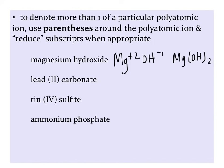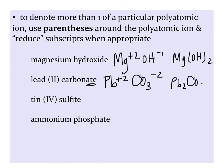In lead two carbonate, lead has a plus two charge, and carbonate with that -ate ending should clue you in to the fact that it's a polyatomic ion. CO3 with a minus two charge. Now when we crisscross our charges, we get Pb2(CO3)2. However, this is not the simplest ratio of ions in the compound. So we can take each of these subscripts and divide them by two, and we're left with just PbCO3. Here you do not need the parentheses around the polyatomic ion, because we have only one of the polyatomic ions.